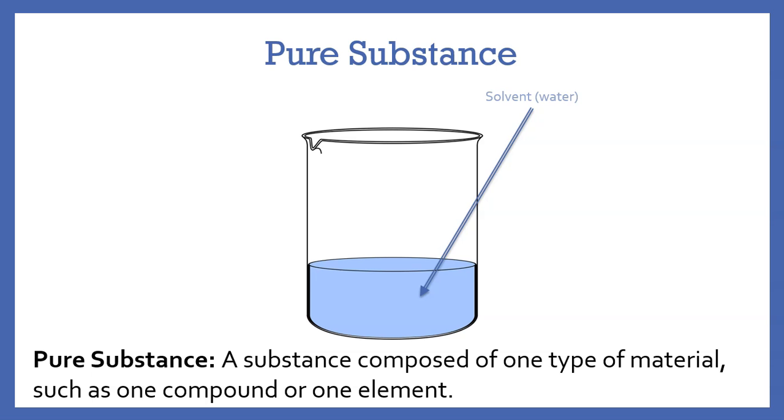To begin, there's some terminology we need to discuss. First, what is a pure substance? A pure substance is a substance composed of one type of material, such as one type of compound or one type of element.